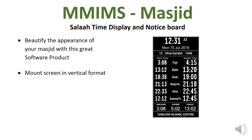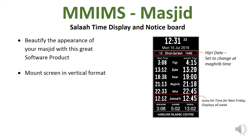This is an example of the portrait display. As you can see, we have the Hijri date, which is set to change at Maghrib time. We have the Jummah Salah time for the following week, which will be displayed throughout the whole week. We have the Masjid name, which can be changed to your institution name.